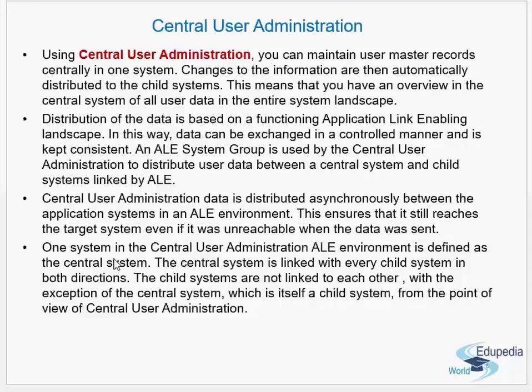In the landscape, one system is the central system and the rest are maintained as child systems. All user master records are created and maintained in the central system and distributed to the child systems. You can view and manage all users centrally in one system.